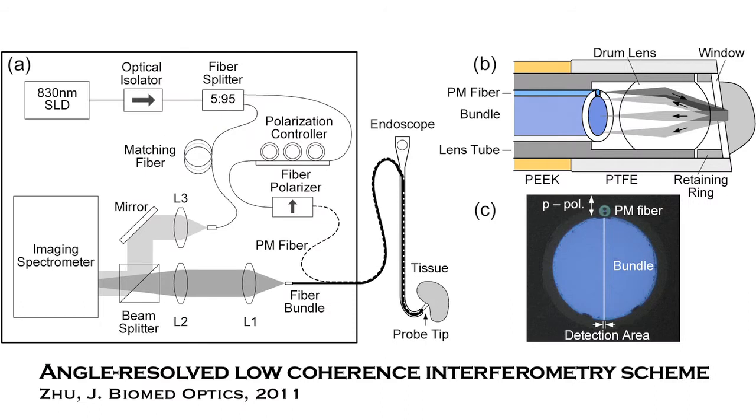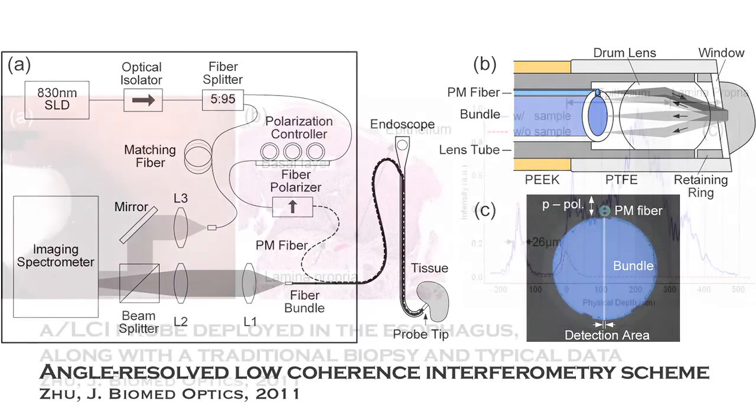So in order to be able to get the single scattered light that's interacted with the nuclei just once, we use a coherence gating scheme. That's the same thing that's used in optical coherence tomography. So the low coherence interferometry provides us depth resolution, so we can isolate the scattering from particular tissue layers. In our case the basal layer of the epithelium is the most useful, and it's roughly two to three hundred microns beneath the tissue surface.